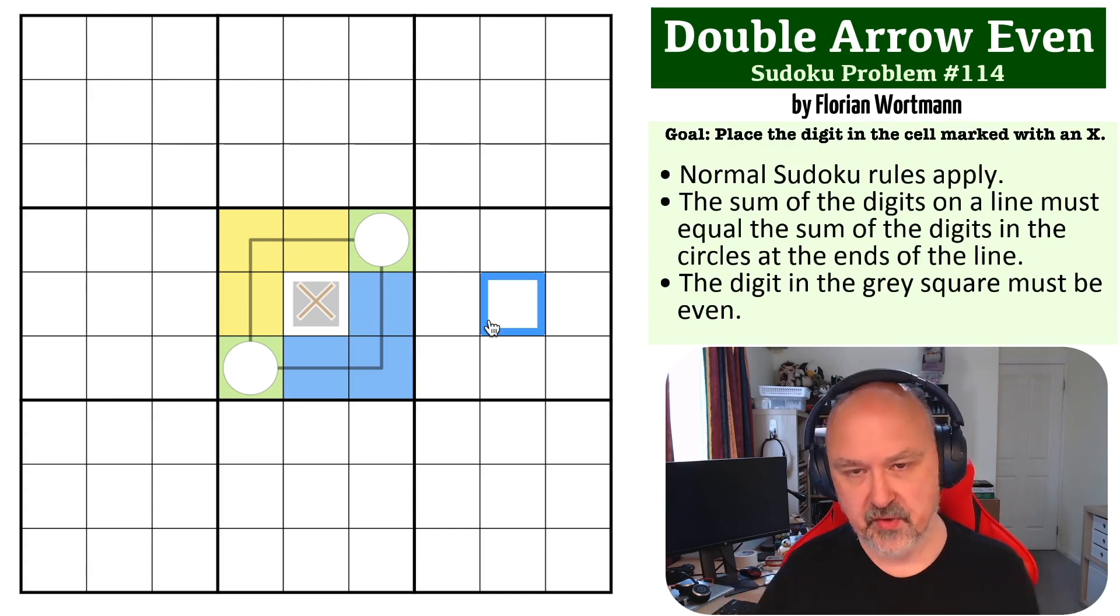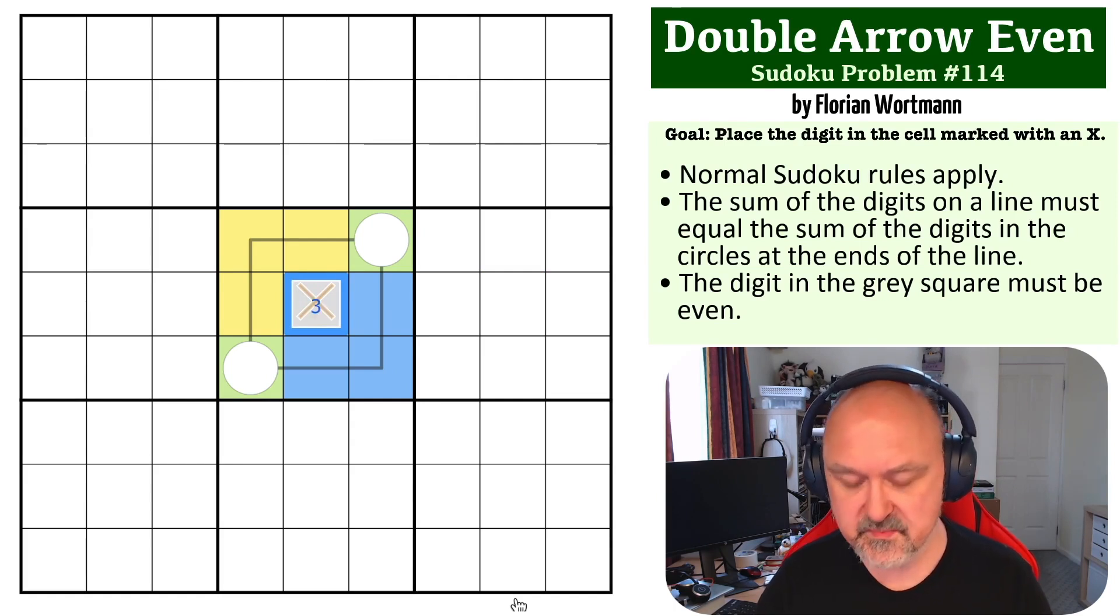We know that 45 is divisible by three, so if you subtract a number that is divisible by three from something that is divisible by three, you'll end up with something that is divisible by three. So this cell in the middle must be divisible by three—it must be three, six, or nine. It must be even, so it must be a six.